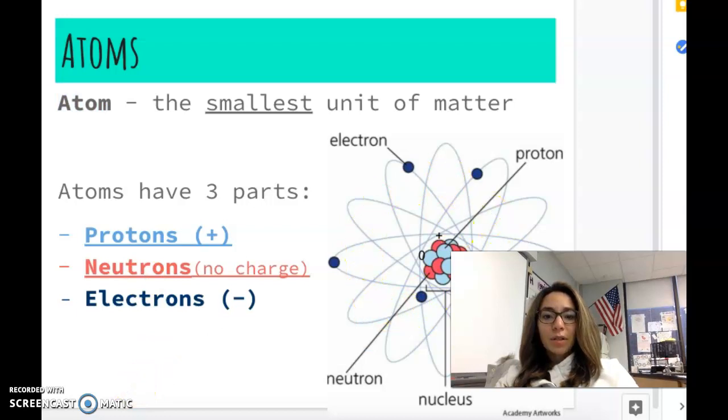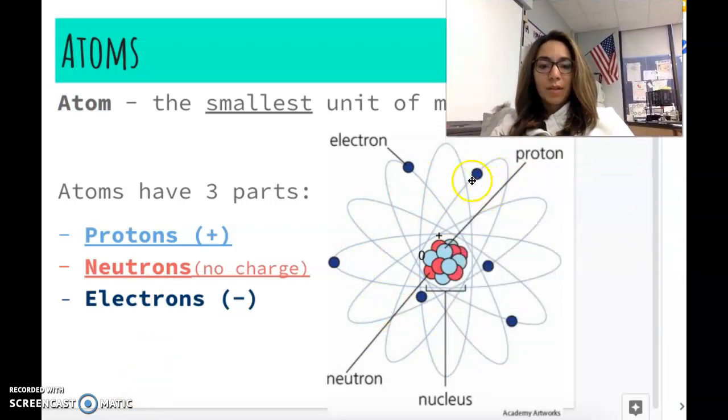This is what an atom looks like. Let me move my face up here. Atoms have three parts. Protons, which are in the center, in the nucleus of the atom. Neutrons, which are also in the center, shown here in red. And electrons, which are around the outside of the atom, in the orbital. This is called the orbital, and we'll talk about that later.